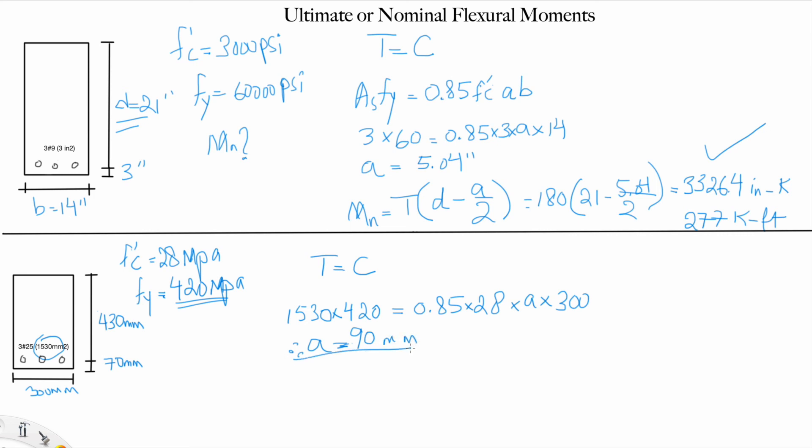Since we get a, that's it. The moment is again T times d minus a over 2, which is equal to T. That's 1530 multiplied by 420, multiplied by d which is 430 minus 90 over 2.